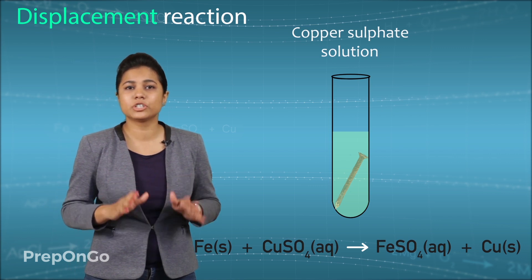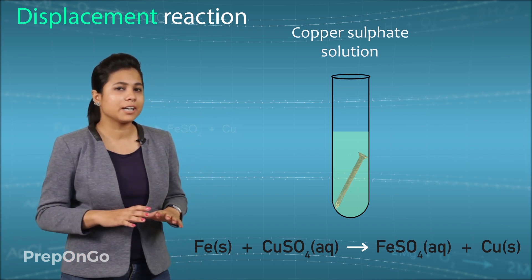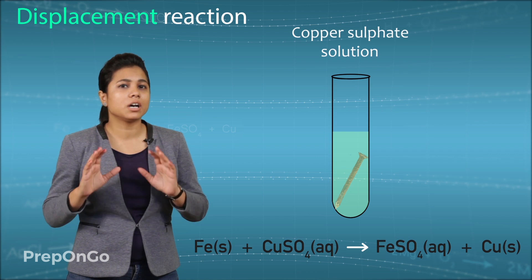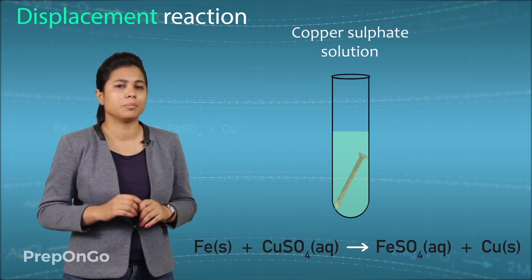So this was a simple reaction which shows that a highly reactive metal can displace a lesser reactive metal from its compound.